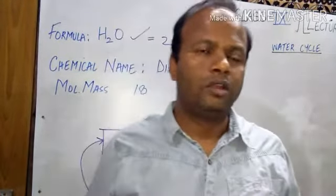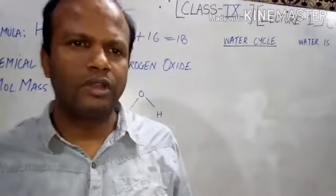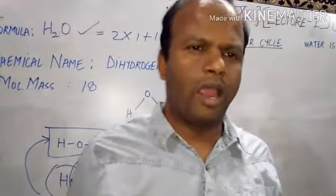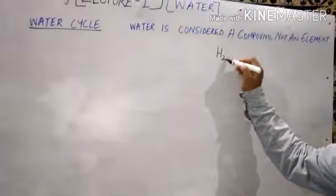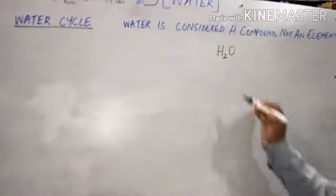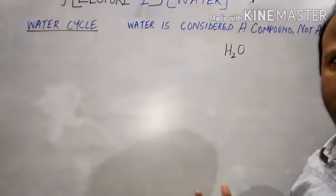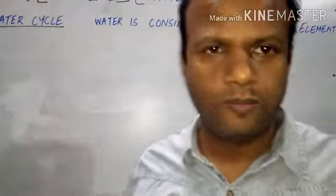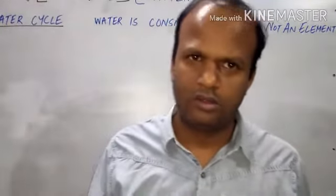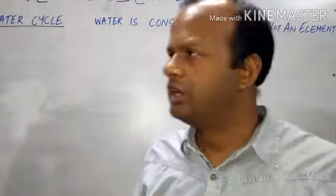Now, why is water considered a compound and not an element? Water has a molecular formula of H₂O. The definition of a compound is: a combination of two or more elements combined in a fixed proportion by weight, forming a pure substance.